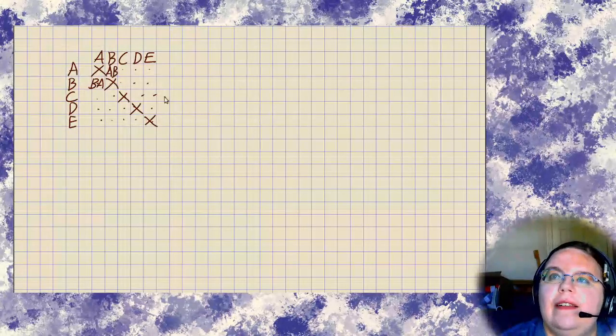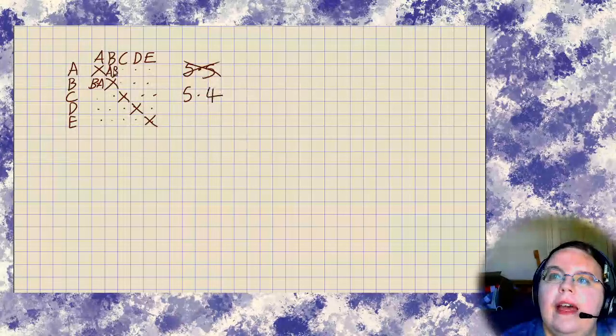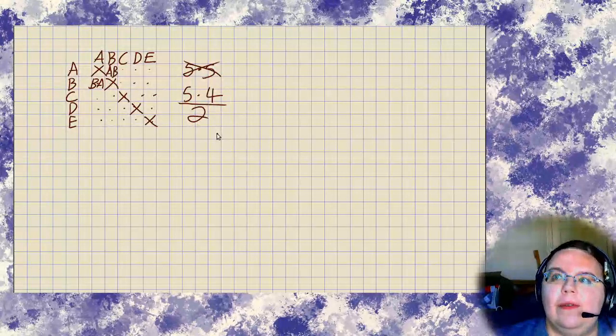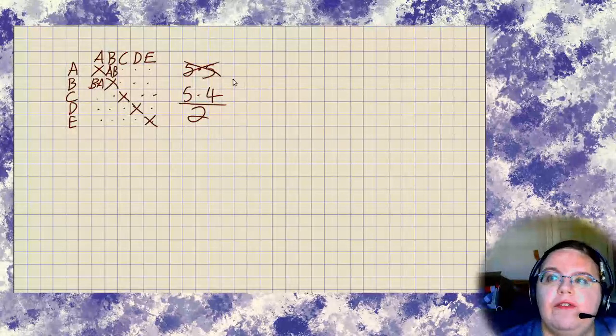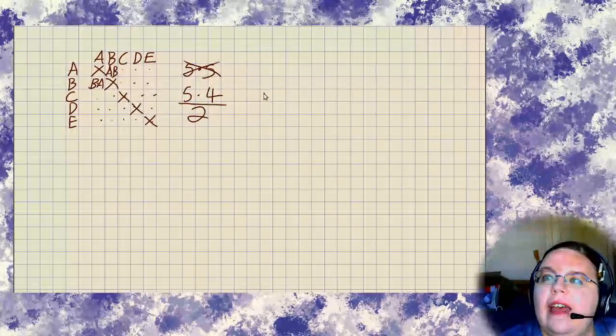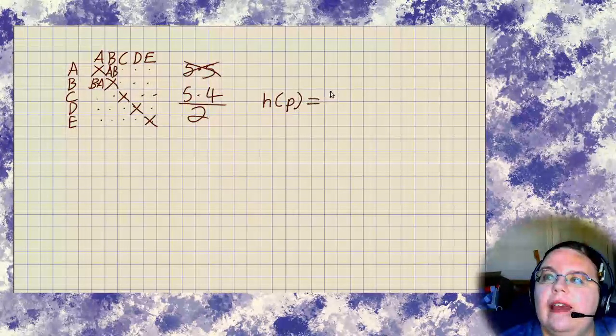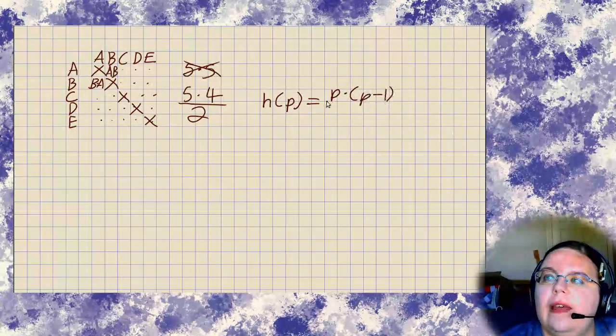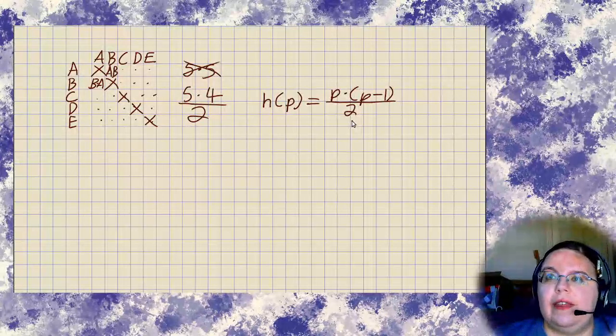We need to subtract off the diagonal. So really, we kind of go from five times five to five times four. And then, since that's really including each handshake twice, we need to divide that result by two. So this right here is one way you can figure out handshake problems. You can say that the number of handshakes for a certain number of people is the number of people times one less than the number of people, and then divided by two. And this is a formula you can use to deal with the handshake function.